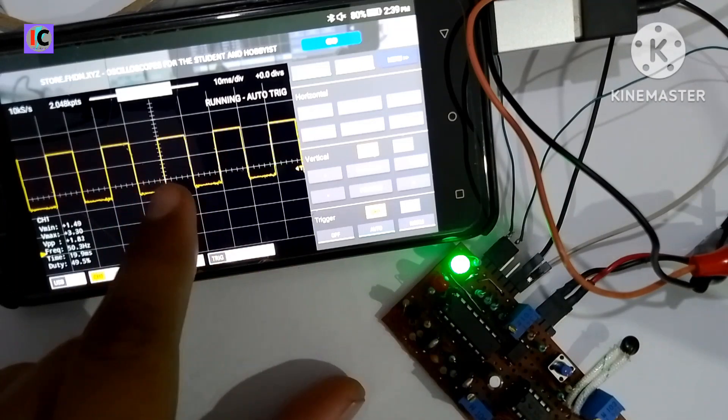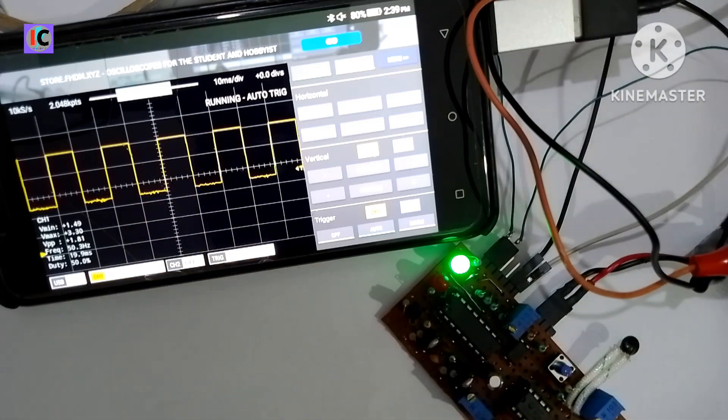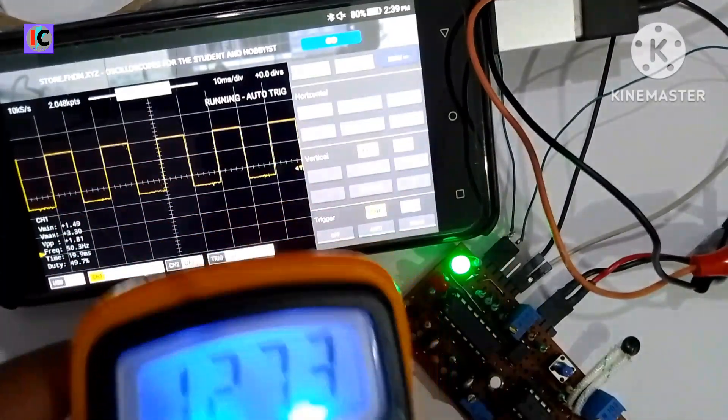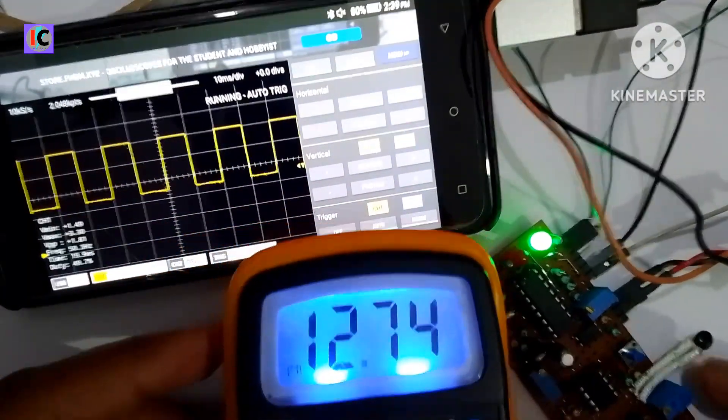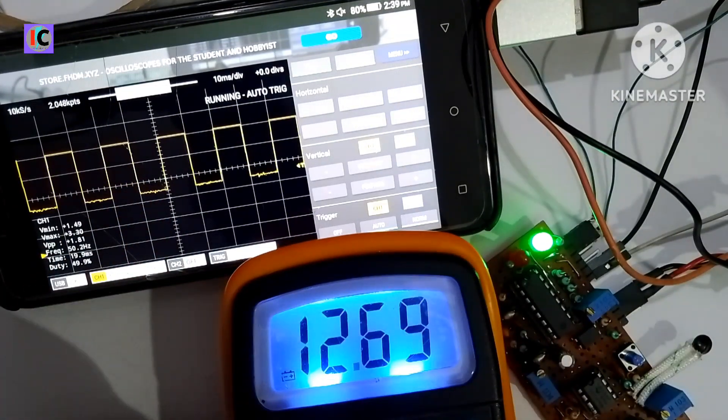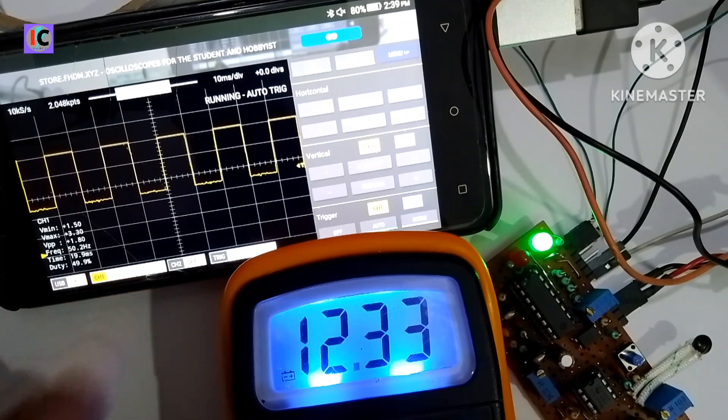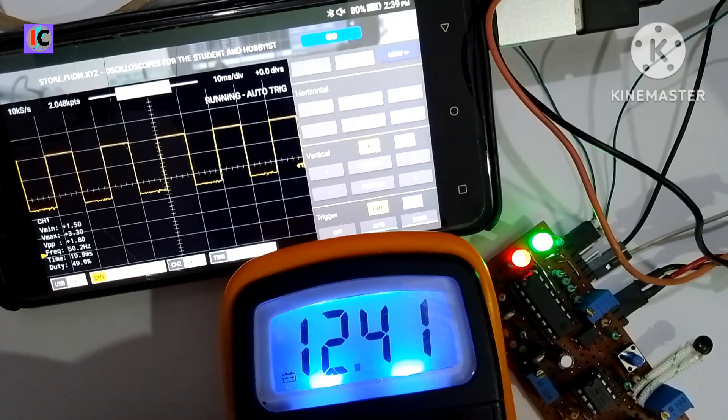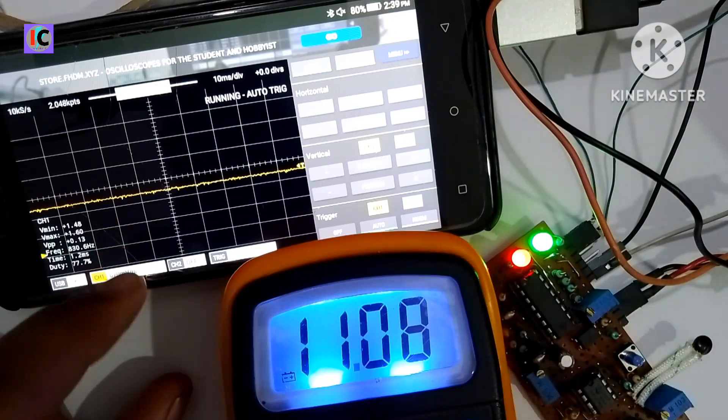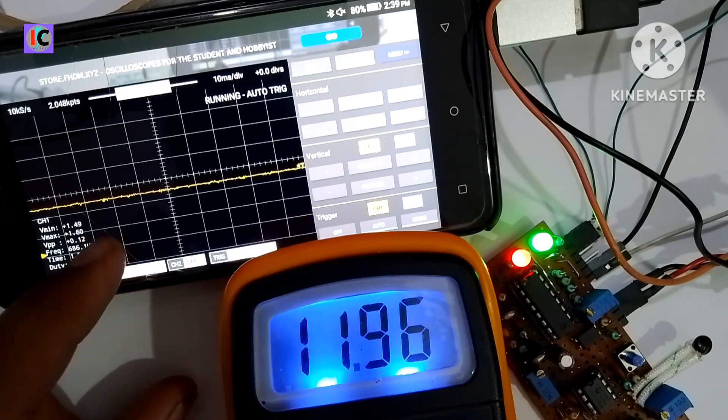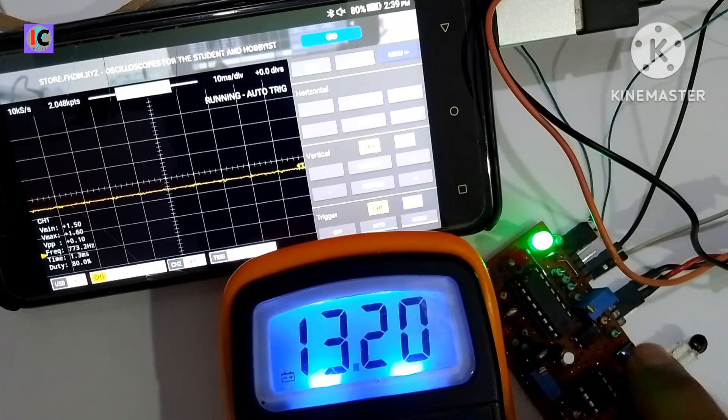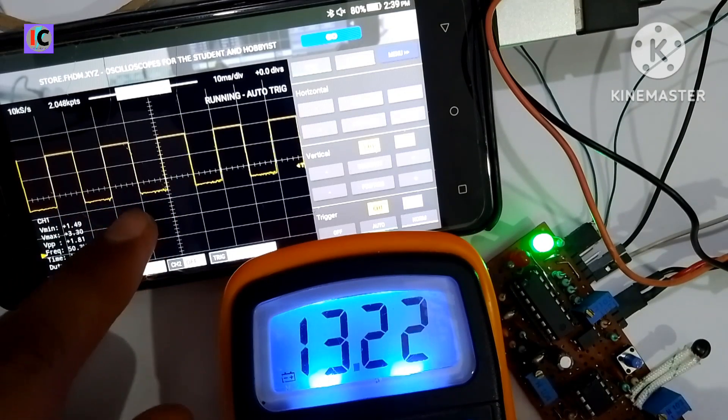Here the PWM goes to zero for low battery protection. If I increase the voltage and press the reset switch given on the circuit, then the PWM stays on.